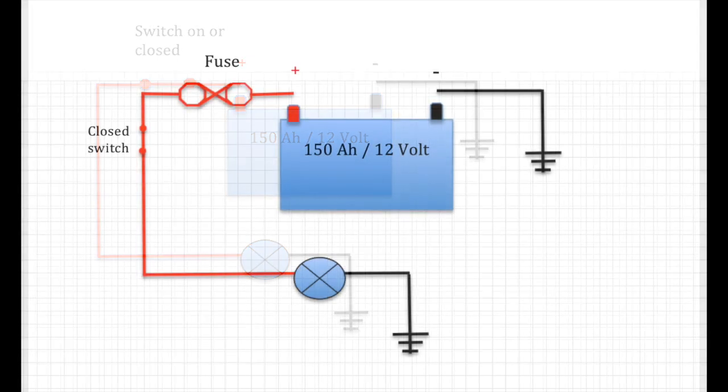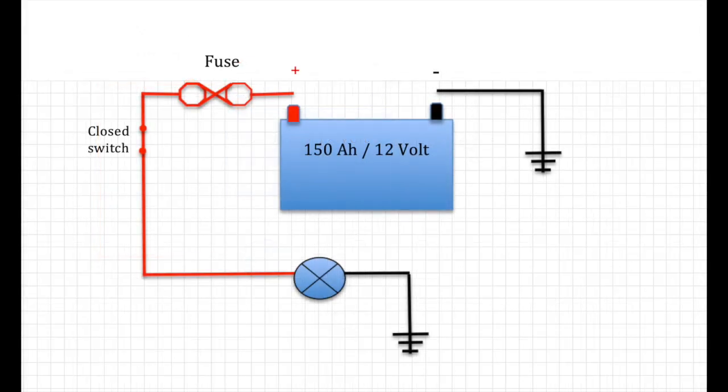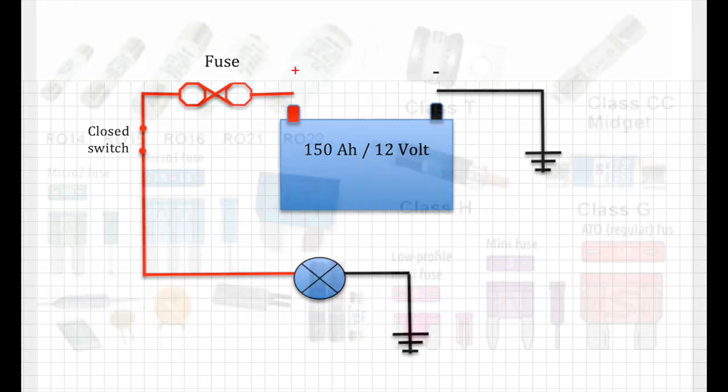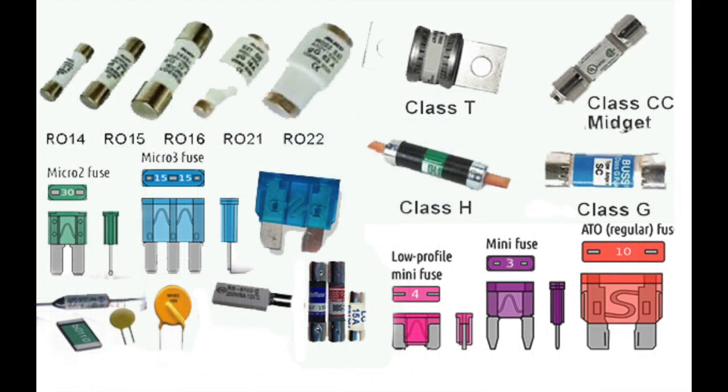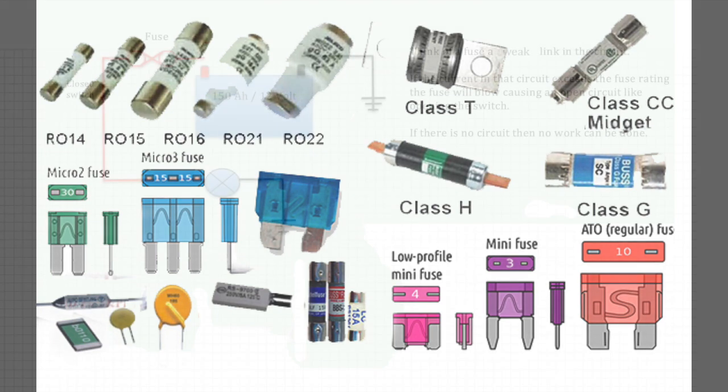Now there's another way of interrupting a circuit, by using a fuse. A fuse is simply a weak link in that circuit. If too much current flows in the circuit, then the fuse will blow. Even if the switch is still closed, electricity cannot flow. There are hundreds if not thousands of different types of fuses. And I won't go into them all now. But again there's a few fundamentals that you need to understand.